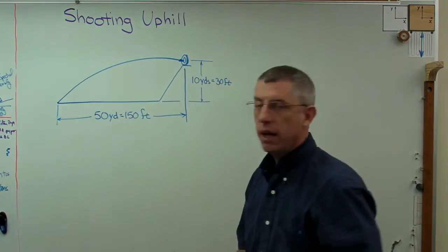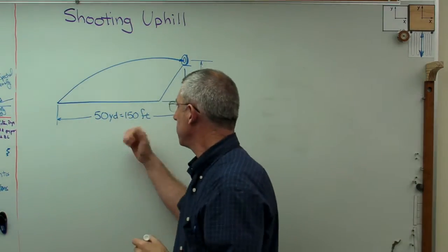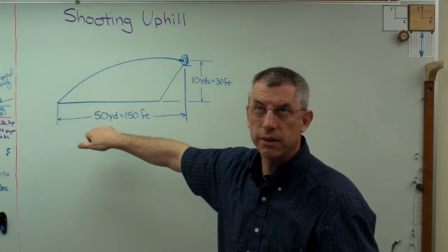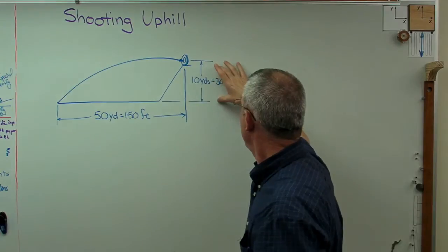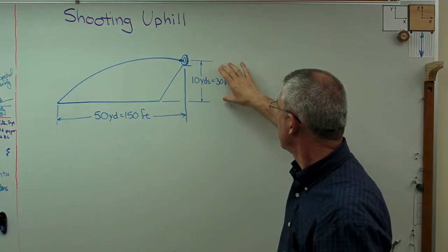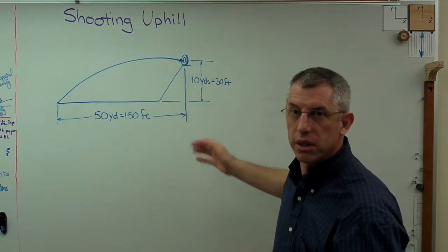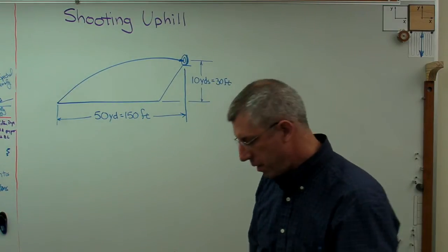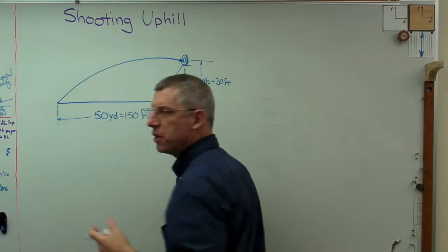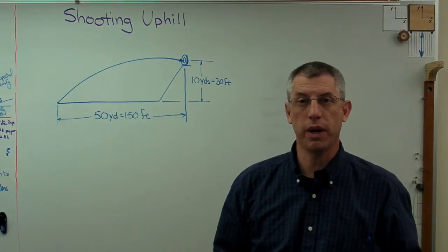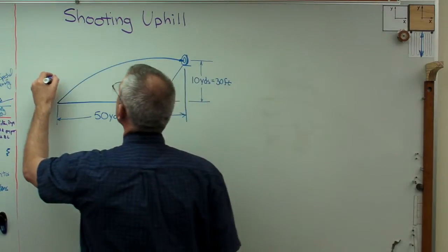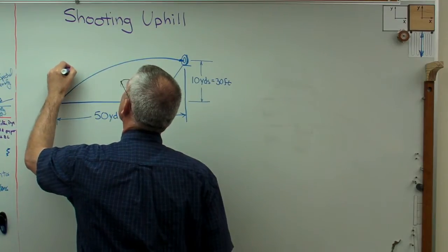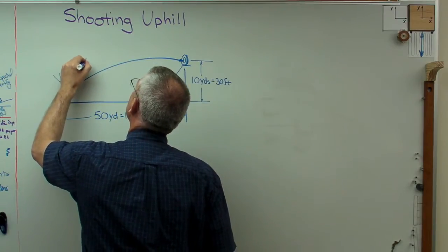There's the target. The horizontal distance is 50 yards — that's 150 feet, a little less than 50 meters. And the vertical distance is 10 yards — that's 30 feet, a little less than 10 meters. I did some measurements on my bow, and the velocity of the arrow when it came off the string was 165 feet per second. So I'll call that V-naught — that's 165 feet per second.